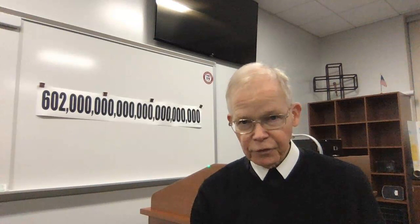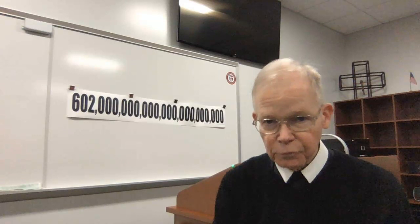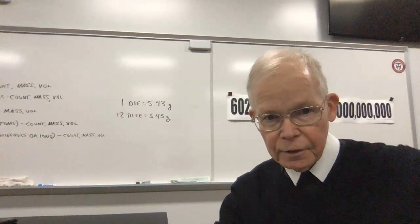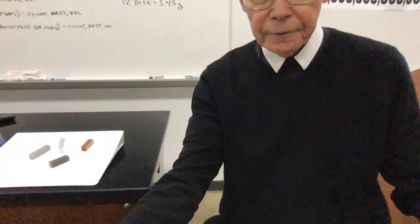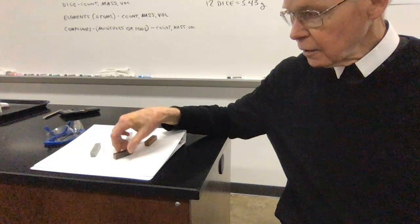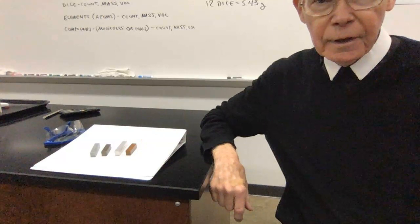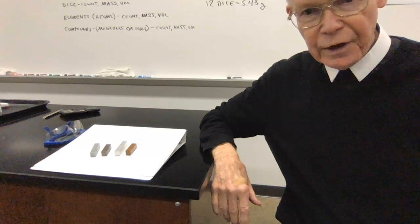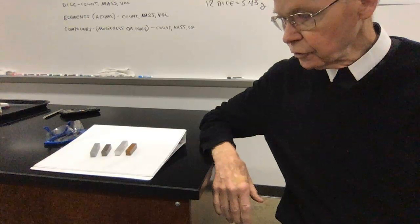I'm going to move the camera around from time to time just so you can get a chance to see things that we've done and some new things that we're going to do. On my benchtop up here, I want to focus first on something that you saw the other day. These are those four different metals that we looked at: aluminum, zinc, copper, and iron. We massed all of them and found that their masses matched up with the values of masses on the periodic table. What I want to do today is show you information that goes a little further than that.